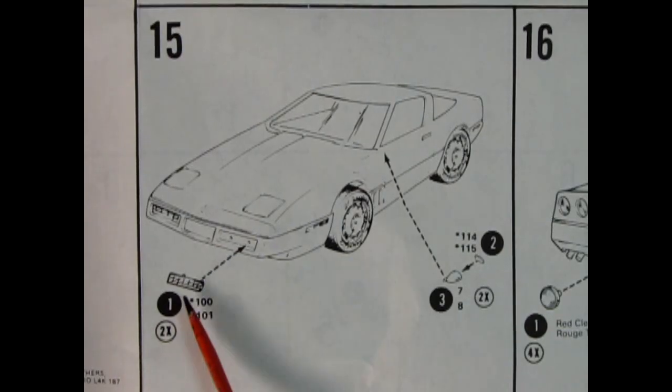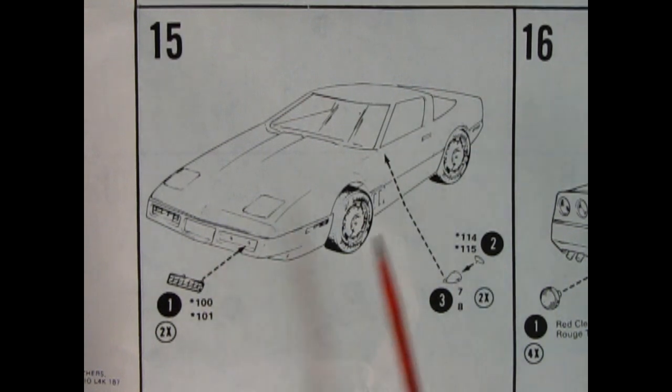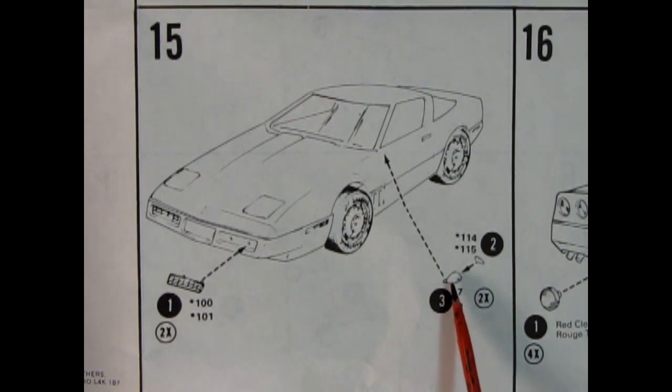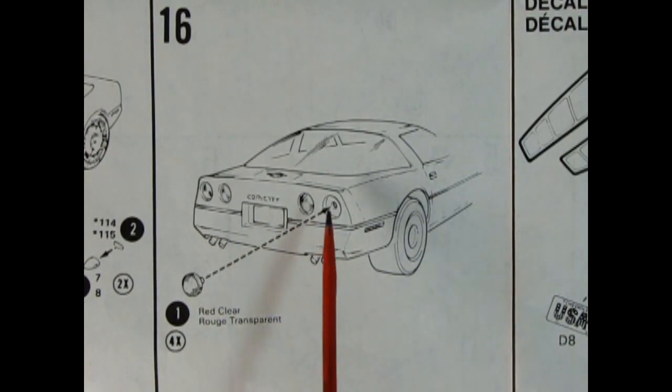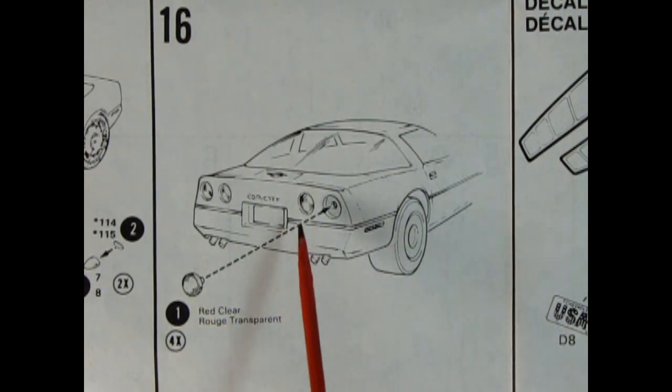Now panel 15 you glue in the turn signals in the front of the nose. And then you've got a two-piece mirror here with your glass mirror which will glue onto the side of the car. Panel 16 shows our rear bumper clip here. And we've got our four tail lights being glued into these little holes here.